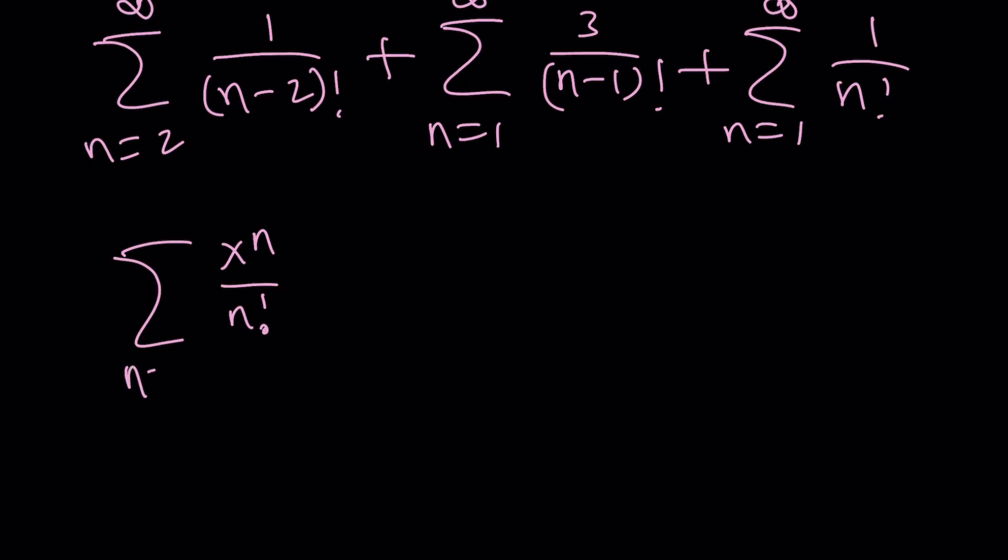This is like x to the power 0 over 0 factorial, so like 1, and then if n is equal to 1 you're going to get x, and then you'll get x squared over 2 factorial, and then x cubed over 3 factorial, and so on and so forth.